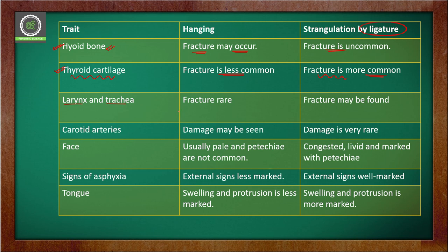The eighth trait is the larynx and trachea: fracture is really very rare in hanging, while in ligature strangulation fractures may be found in the larynx or trachea. The ninth trait is the carotid arteries: they are damaged in case of hanging, whereas in ligature strangulation the carotid arteries are damaged rarely.